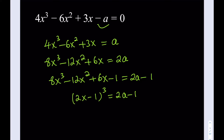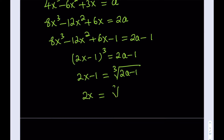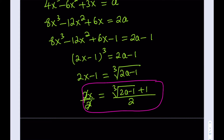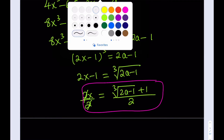How do you solve for x? You can cube root both sides. If you do, you'll get 2x − 1 equals the cube root of 2a − 1. Then add 1 to both sides, getting cube root of 2a − 1 plus 1. Divide both sides by 2, and that's our x. This is one of the three solutions and it is a real solution — for any value of a, the cube root is always defined and real.